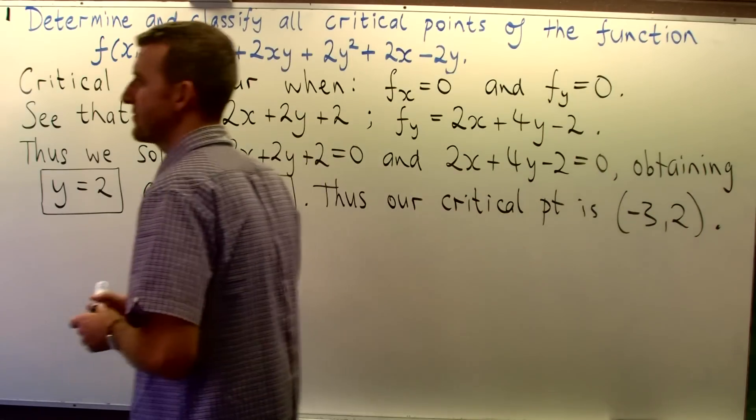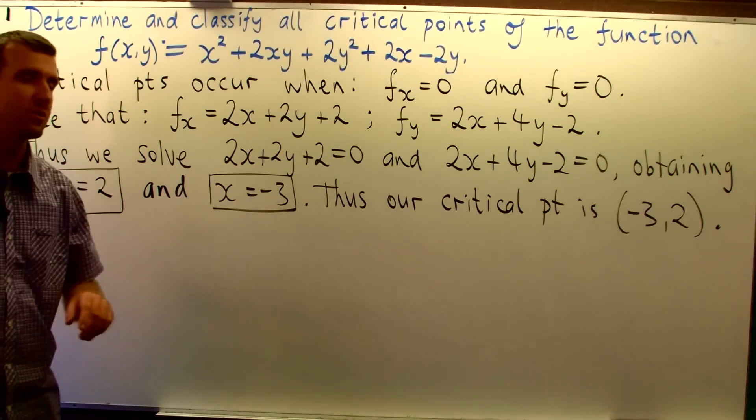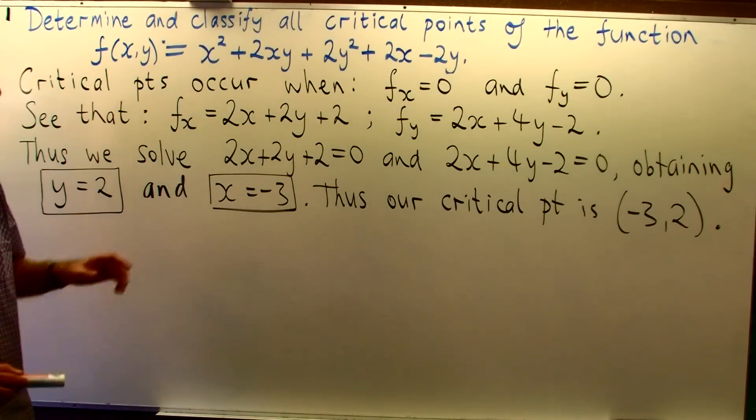And then if we back substitute we will get x equal minus 3. So our critical point occurs at the point x equals minus 3, y equals 2. Okay, so that is the first part of the problem done. We have determined the location of the critical points. The second part is to classify them.